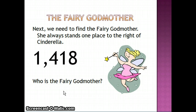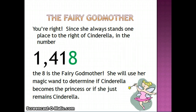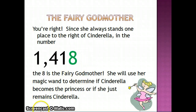The fairy godmother always stands one place to the right of Cinderella. So if you remember, the one in the tens place was Cinderella, so one space to the right is the fairy godmother. Since she always stands one place to the right of Cinderella, in the number one thousand four hundred eighteen, the eight is the fairy godmother.